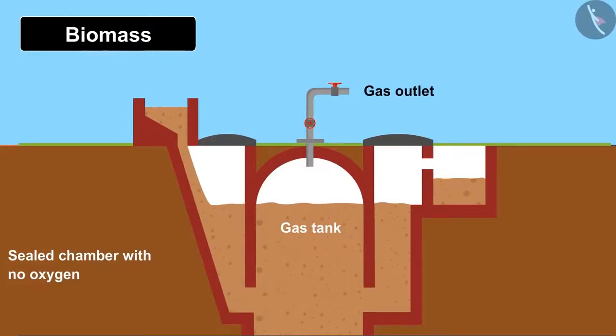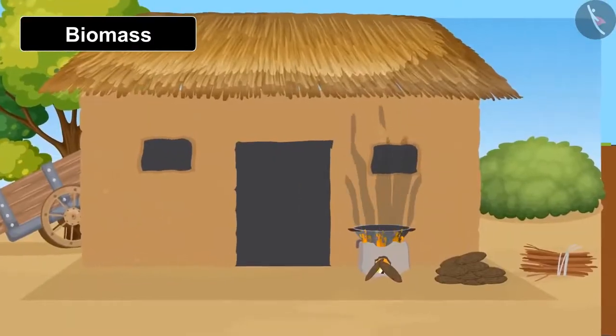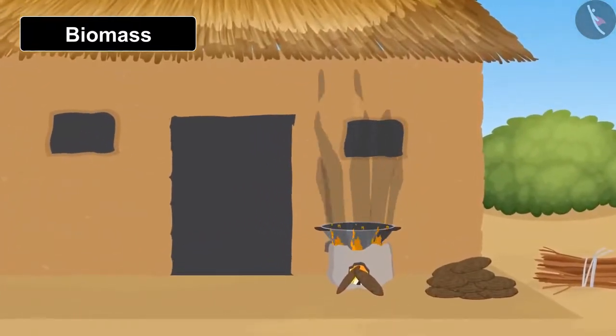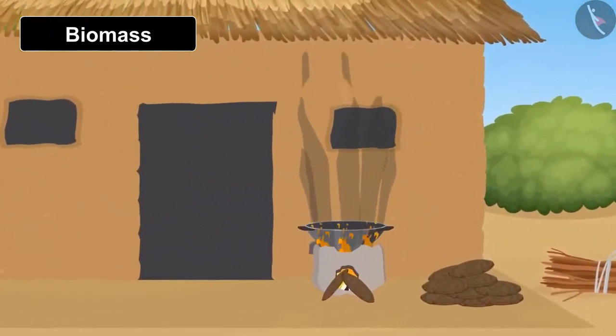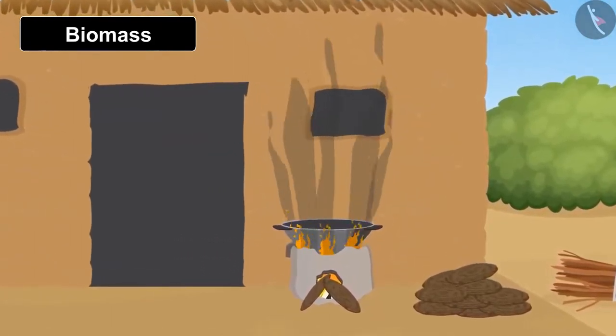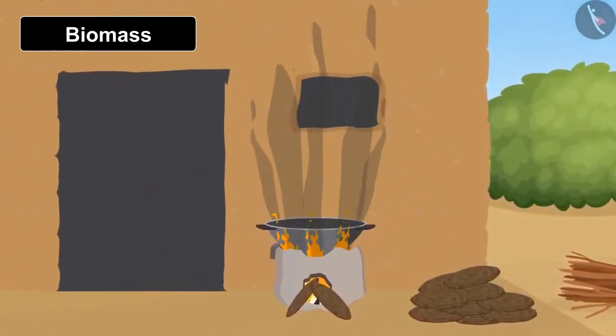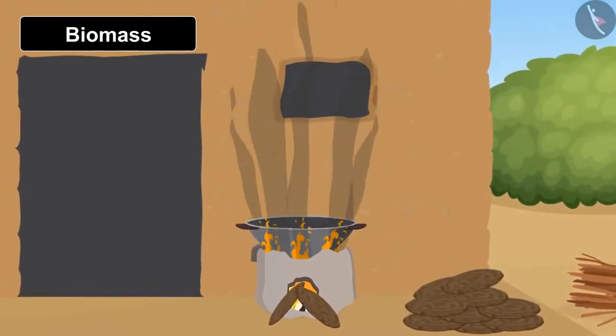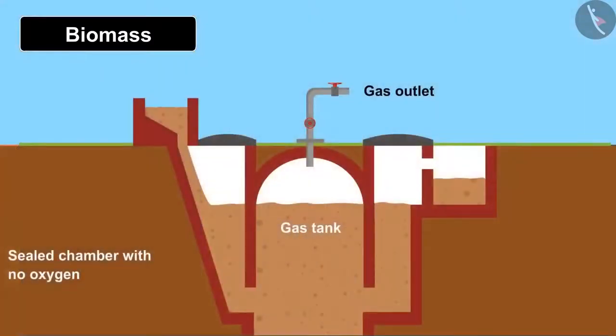Another form to convert the energy is by biomass plants. We have seen dried cow dung and the remains of agriculture is used as fuel in villages, but there is a lot of air pollution due to this activity and less energy is received. To convert more amount of energy, huge biomass plants are constructed.